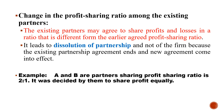For a clear example: A and B are partners sharing profit in the ratio 2:1. It was decided by them to share profit equally, meaning 50%-50%. But before the new agreement, the ratio was 2:1.